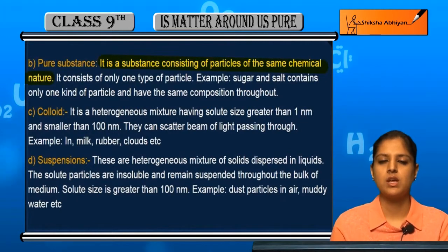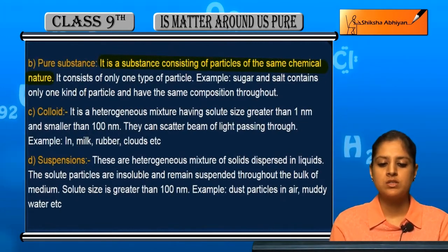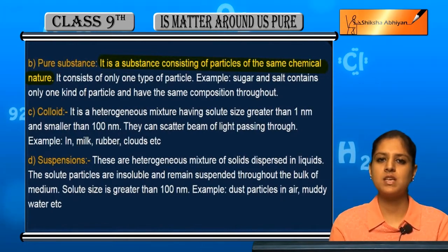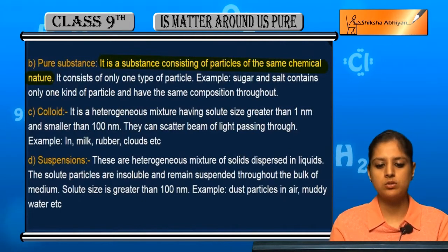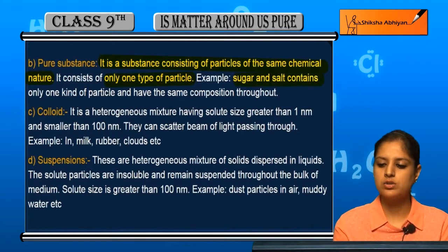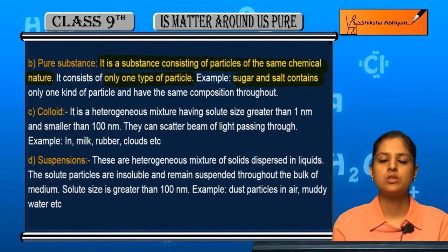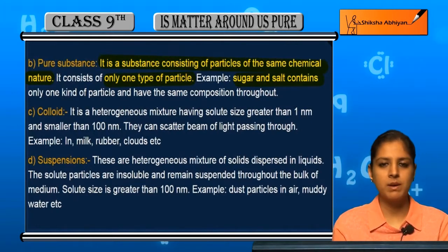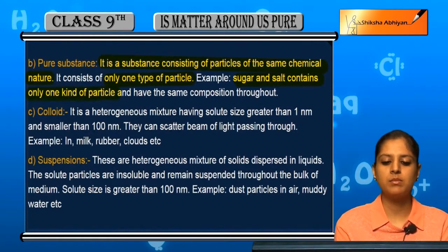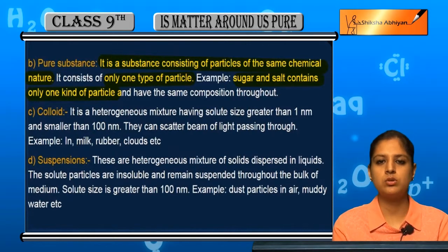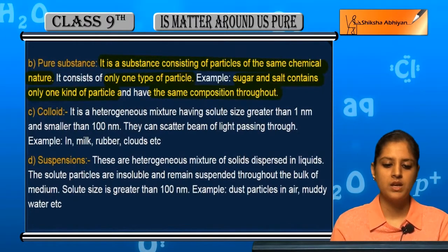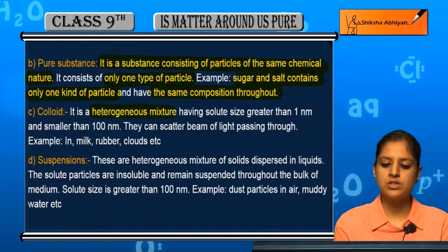Next is a pure substance. It is a substance consisting of particles of the same chemical nature. Ekhi type ke particles hote hain usme — same type ke atoms, same type ke molecules, same type ke particles — in ka same chemical nature hota hai. For example, agar hum sugar aur salt ki baat karayen alag-alag individually — salt alag, sugar alag — individual sugar aur individual salt me sirf ekhi type ki particles hoti hain, aur unka composition bhi har jagah se same hota hai.